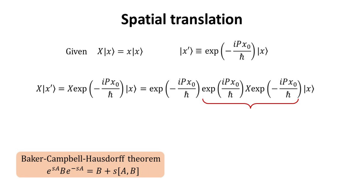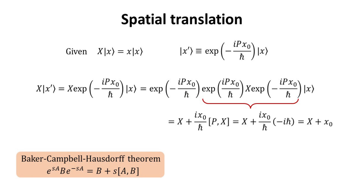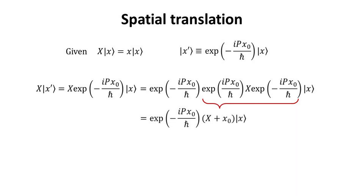This trio product can be manipulated using the reduced Baker-Campbell-Hausdorff theorem. The general version of this theorem is shown here, which can be reduced to the simplified form when the commutator of A and B commutes with B, as in our example. With some simple algebra, we can show that the trio product yields the operator x plus x_0, using the well-known xp commutator relation as shown.